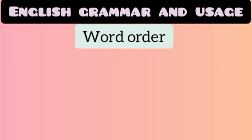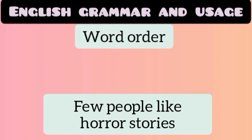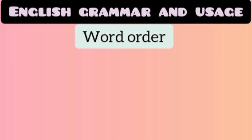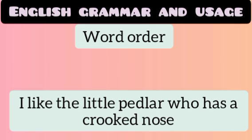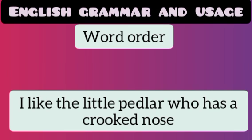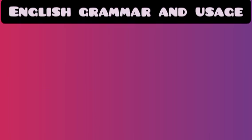Number four: when an adjective is used attributively, it comes before the noun which it qualifies. For example, 'Few people like horror stories' — the adjective 'few' comes before the noun. Another example: 'I like the little peddler who has a crooked nose.' Here 'little' and 'crooked' are both adjectives used attributively, coming before the nouns they qualify.